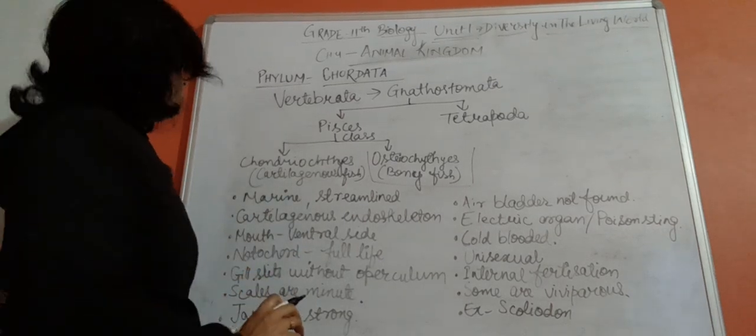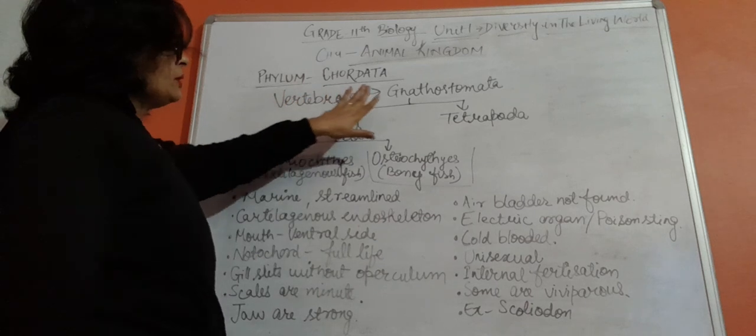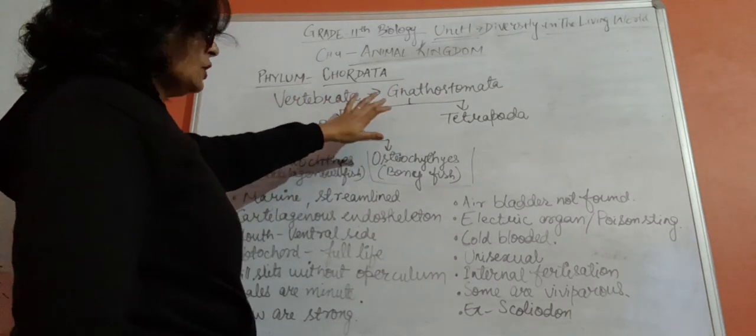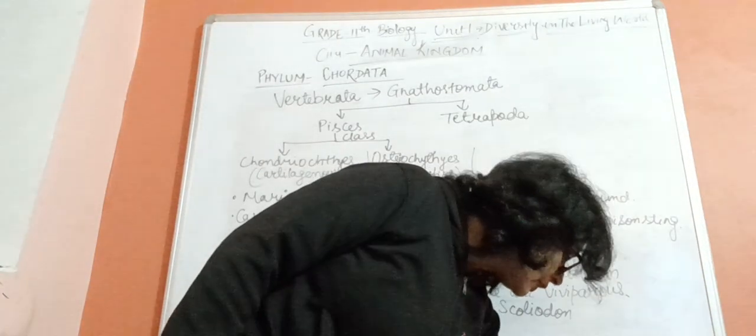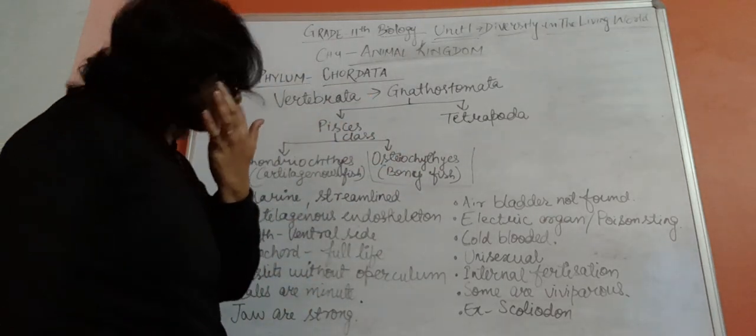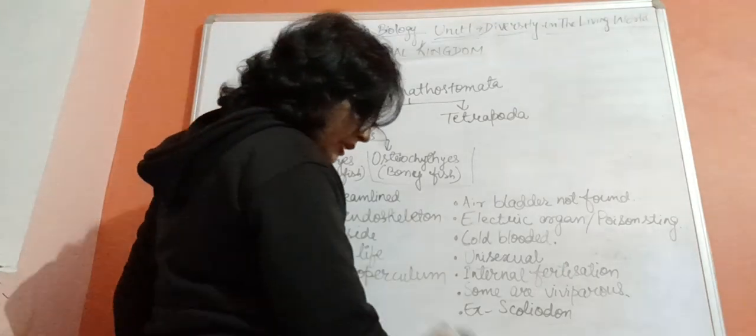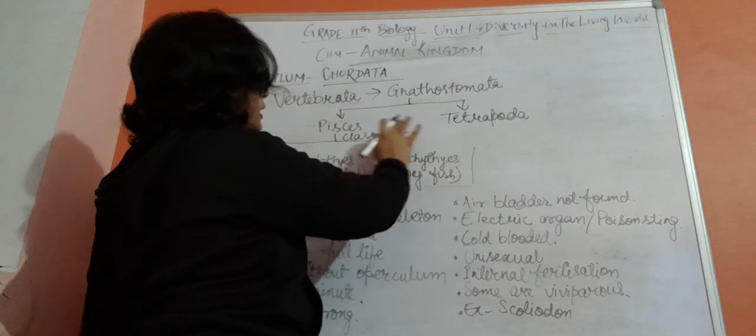Hello everyone, today's topic is phylum Vertebrata and its type, Gnathostomata. In the last class we discussed Agnathostomata. The second part of vertebrates is Gnathostomata. Gnathostomata can be divided into two parts: Pisces and Tetrapoda.